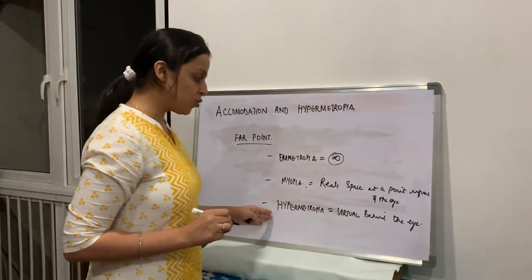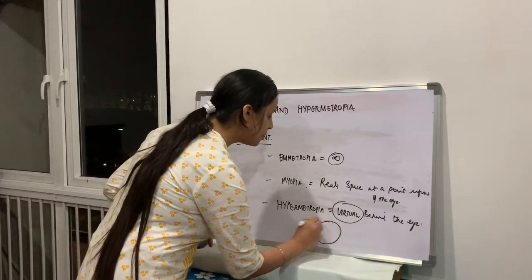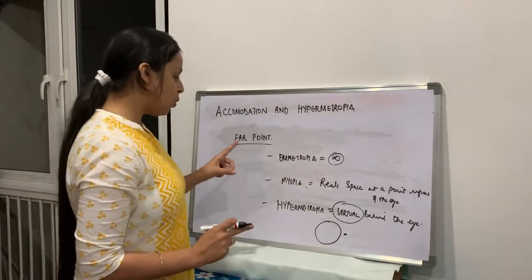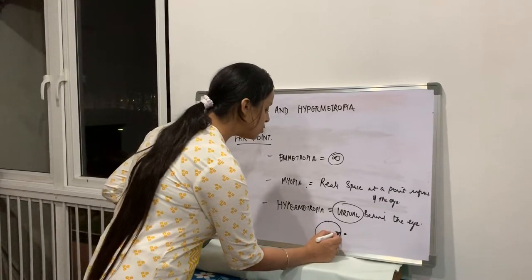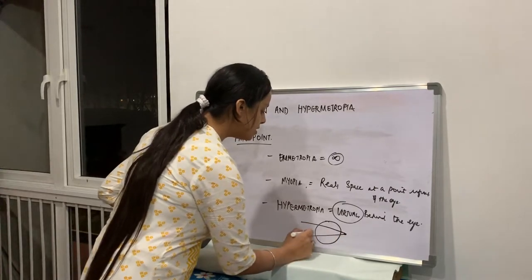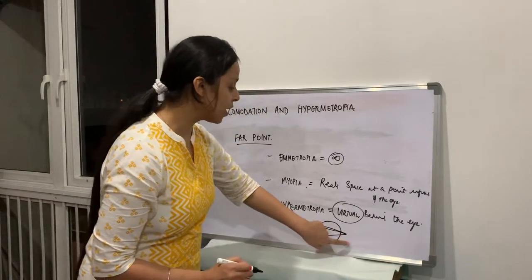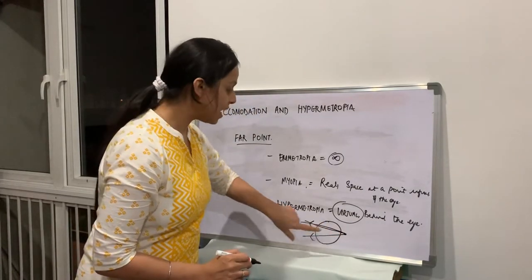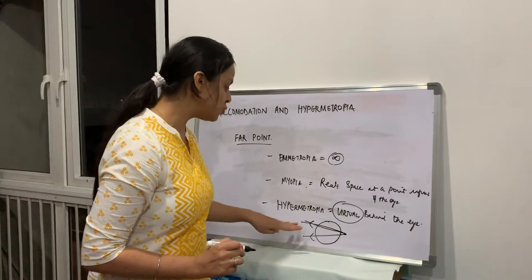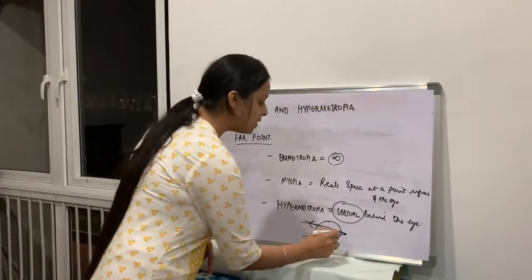In hypermetropia, the Farpoint is virtual because it is situated behind the retina. The rays of light appear to diverge from this point located behind the retina. It is not possible to place an object there, and that is why this point is virtual.